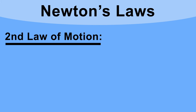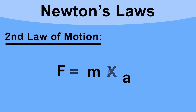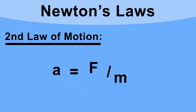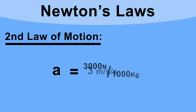Let's apply this to the car. The resultant force was 3000 newtons and the mass of the car is 1000 kilograms. Rearranging F = ma gives acceleration equals force divided by mass: 3000 newtons divided by 1000 kilograms gives an acceleration of 3 meters per second squared.